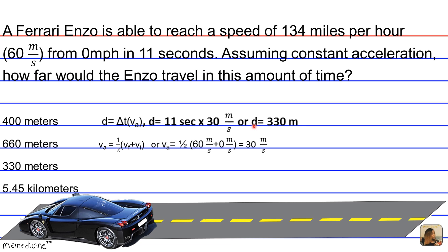So d equals 330 meters, because 30 meters per second multiplied by 11 seconds, and the second dimensions cancel, gives you 330 meters.